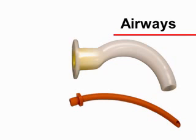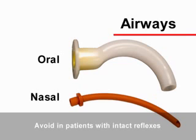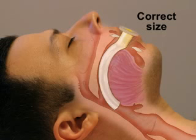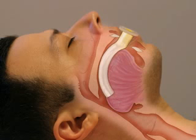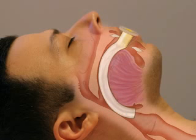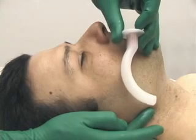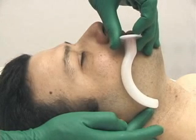Occasionally, it is difficult or impossible to provide ventilation unless an oral or nasal airway is inserted. These devices are most helpful when the cough and gag reflexes are absent. Insertion in patients with intact reflexes may precipitate coughing, vomiting, and laryngospasm. When used, the appropriate size device must be selected in order to avoid worsening of the airway obstruction. Too small an oral airway may push the tongue against the oropharynx. Too large an oral airway may push against the epiglottis and trigger laryngospasm.